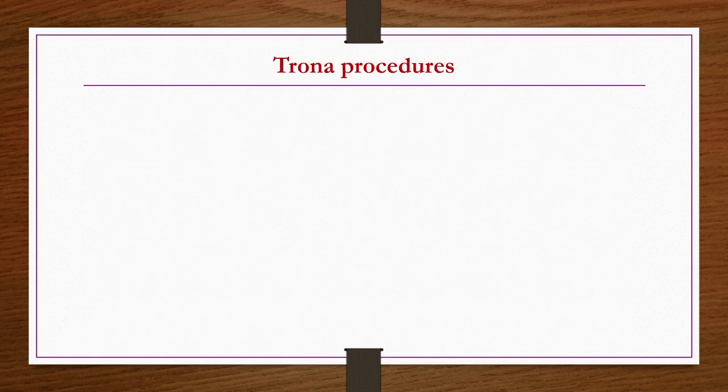Now we see the Trona process. In this process we get three major categories of products: one is the soda category, another is the potash category, and the third is the borax category. Primarily, the brine is concentrated and in three different stages three different products are obtained: first at the soda level, then the potash level, and finally the borax level. After borax production, the remaining mother liquor is fed back to the initial brine vessel.